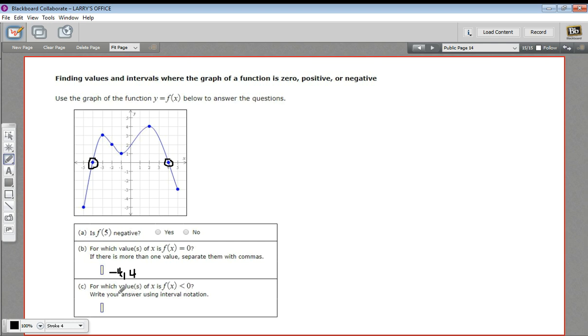C says for which values of x is f of x less than zero. So what that means is all the places where the function is down here in the negative part of the y values. So that interval would be, well, there's two of them.